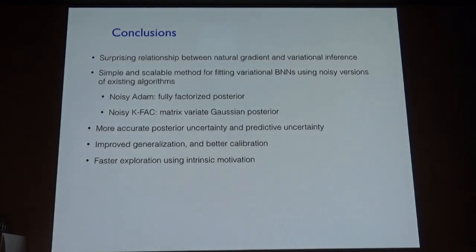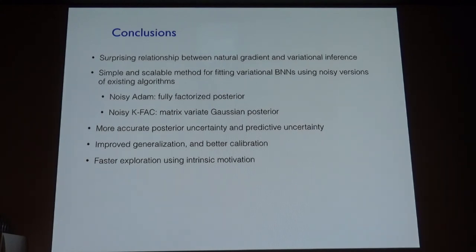To summarize: I've highlighted a surprising relationship between optimization and variational inference, and a very simple method for training Bayesian neural nets with very flexible posterior distributions that is just a slight variant on the KFAC optimization algorithm. It gives better representations of uncertainty, faster exploration in reinforcement learning, better generalization, and much better calibrated predictions.